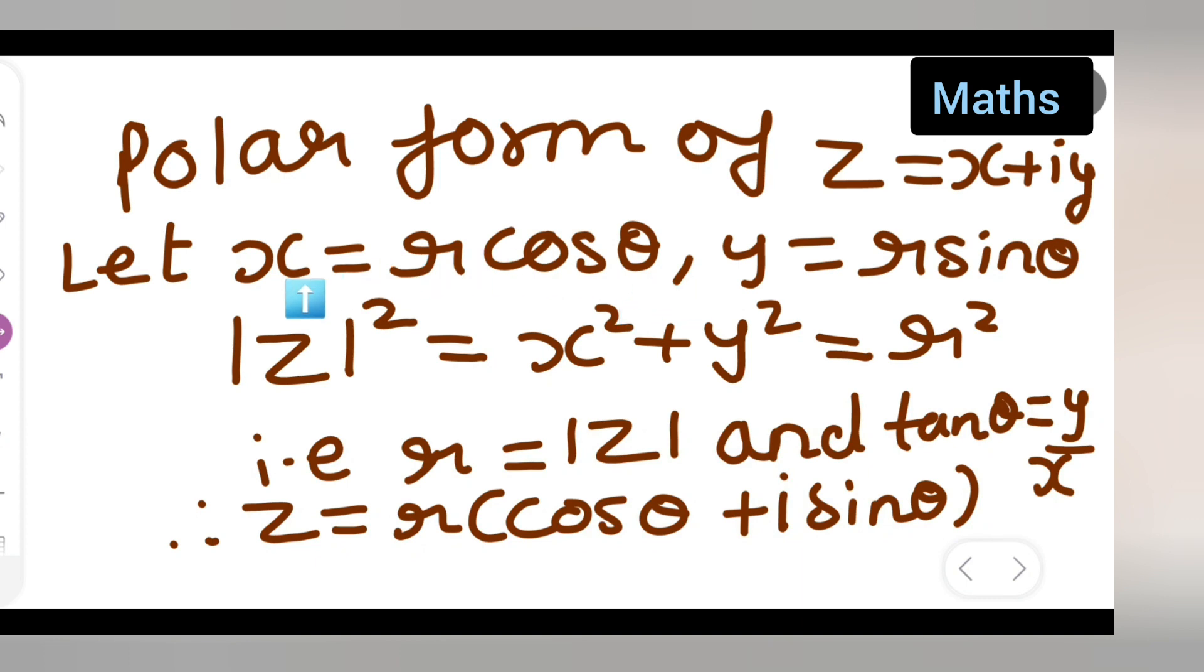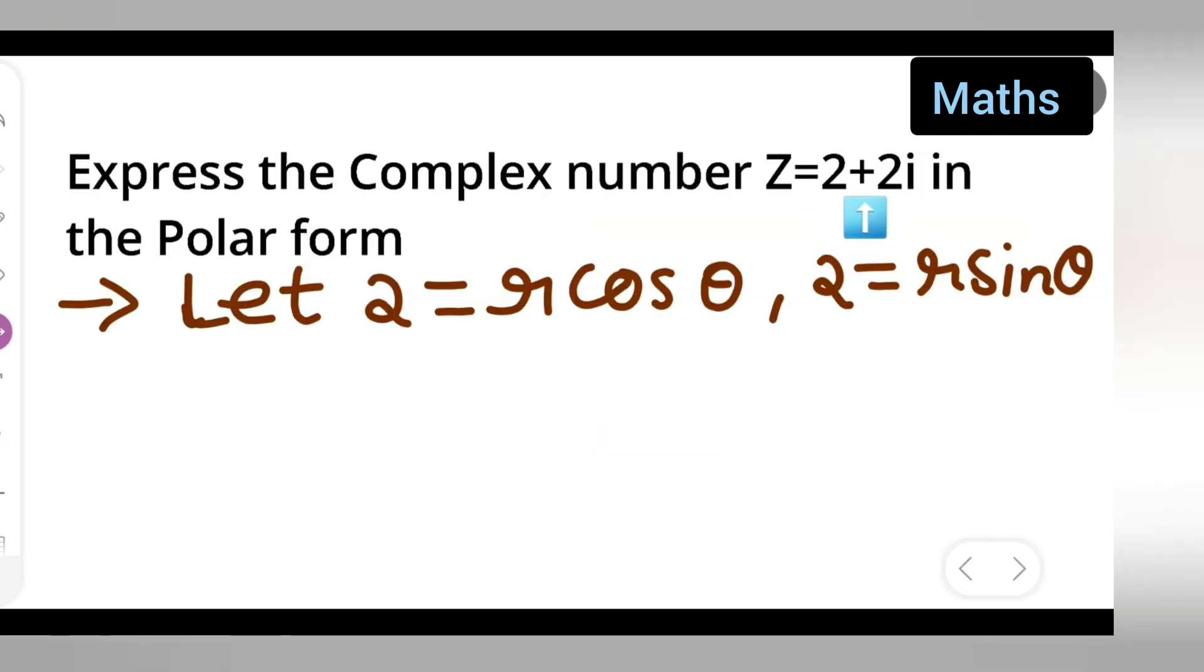Here in place of x that is 2 and in place of y there is 2. So 2 equals r cos theta, 2 equals r sin theta. This was the value of y.